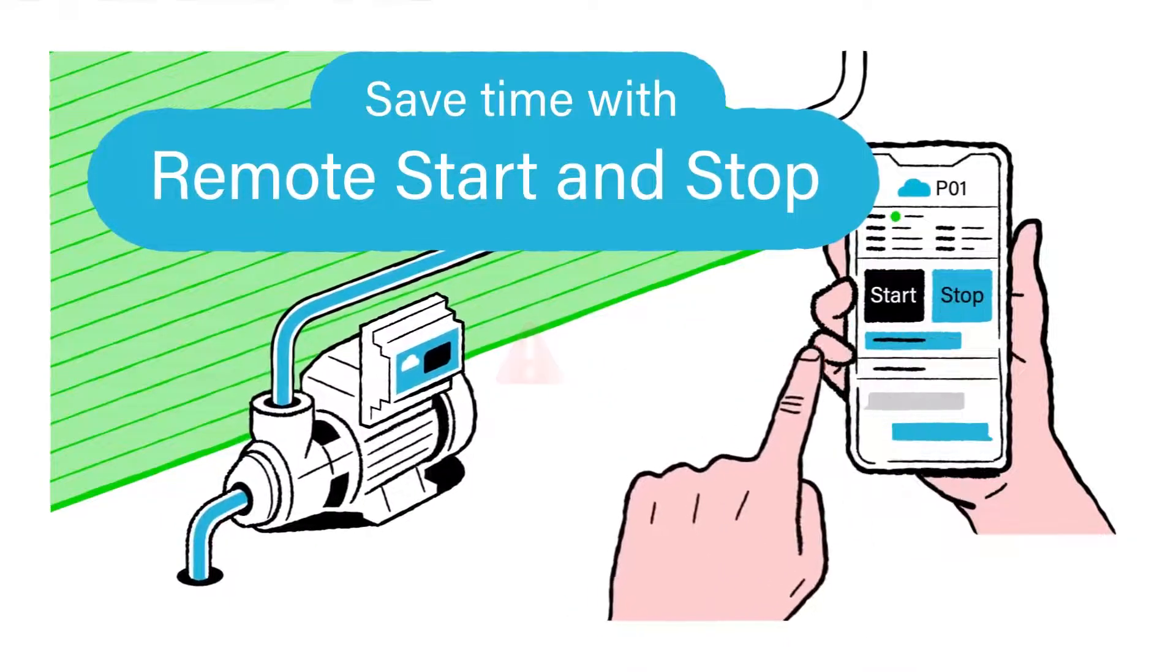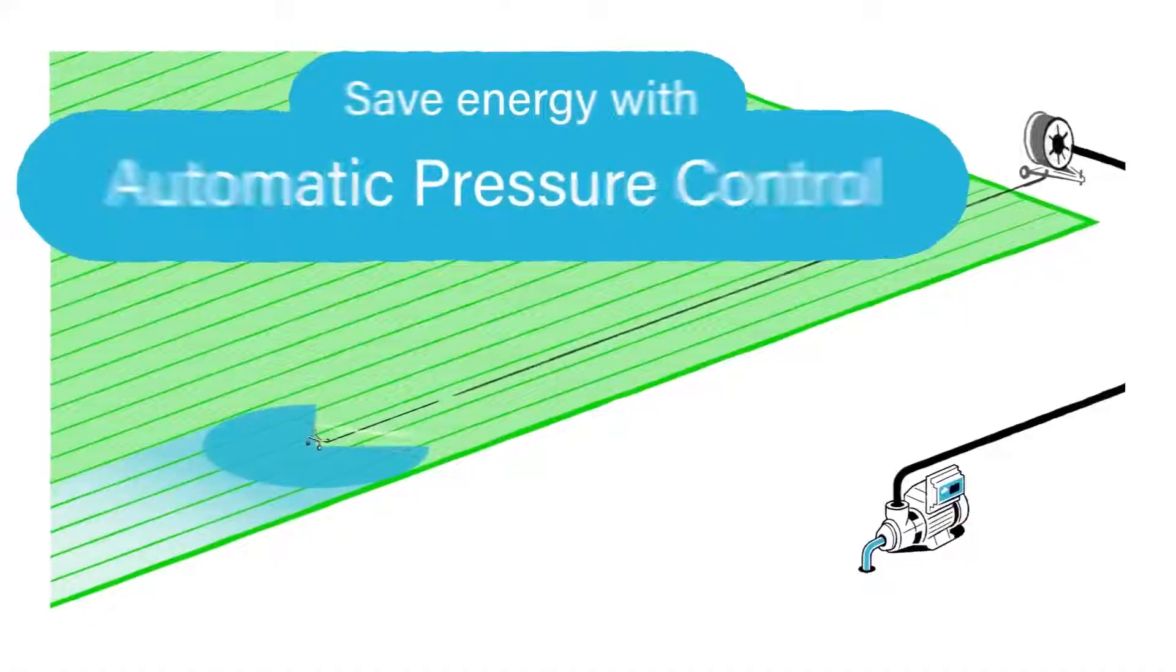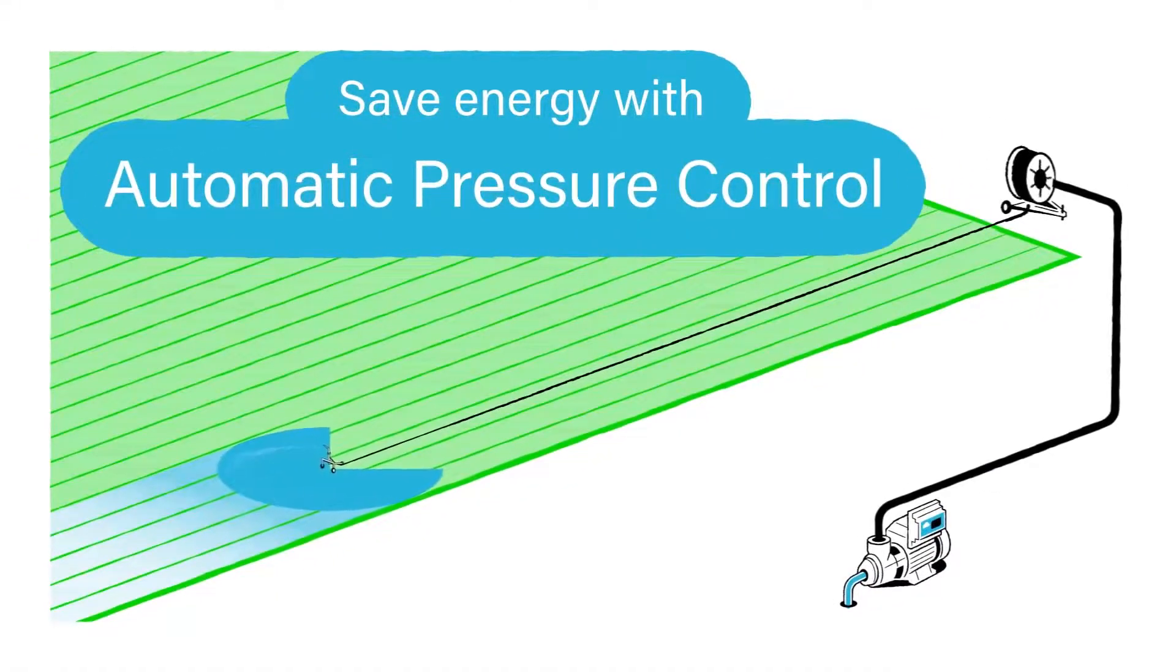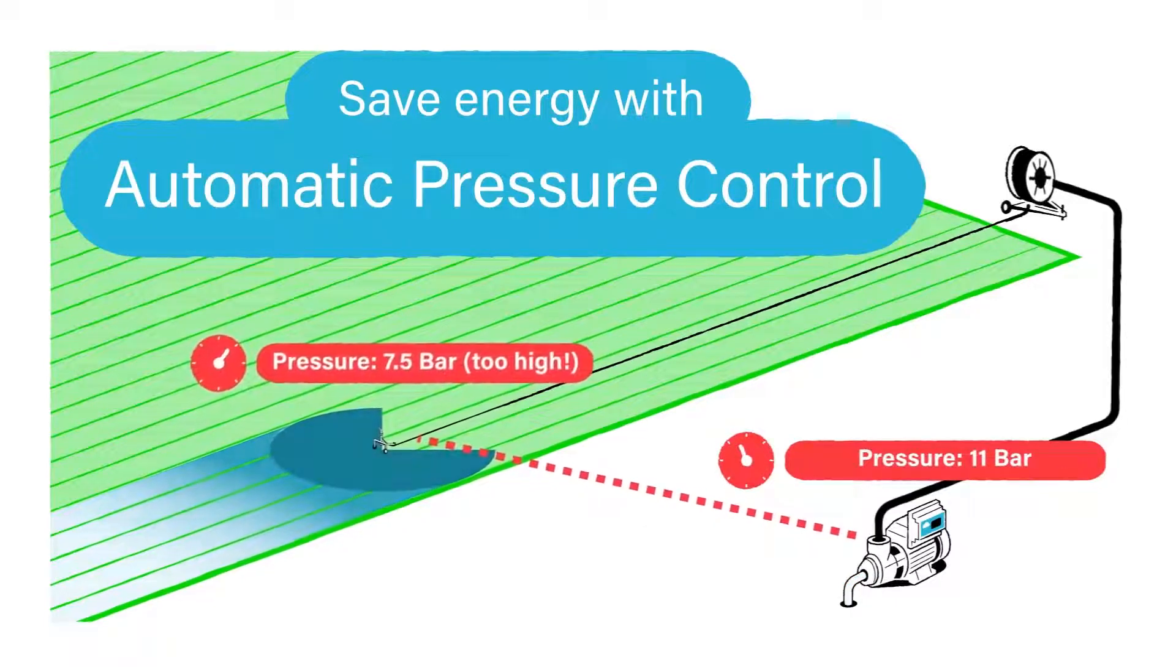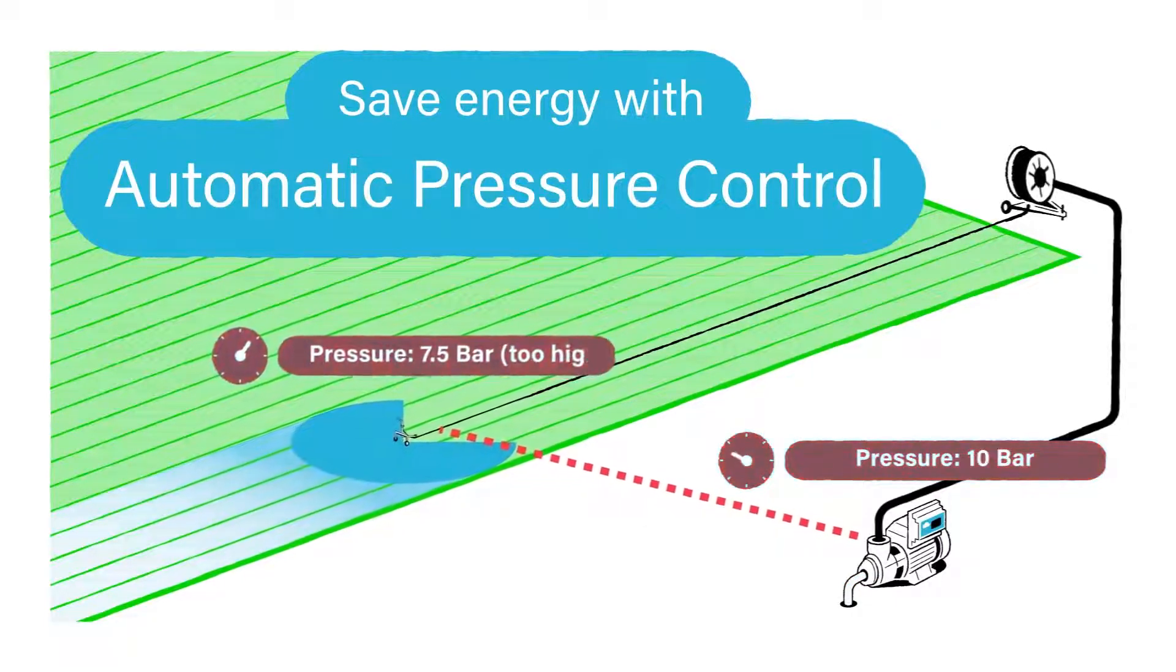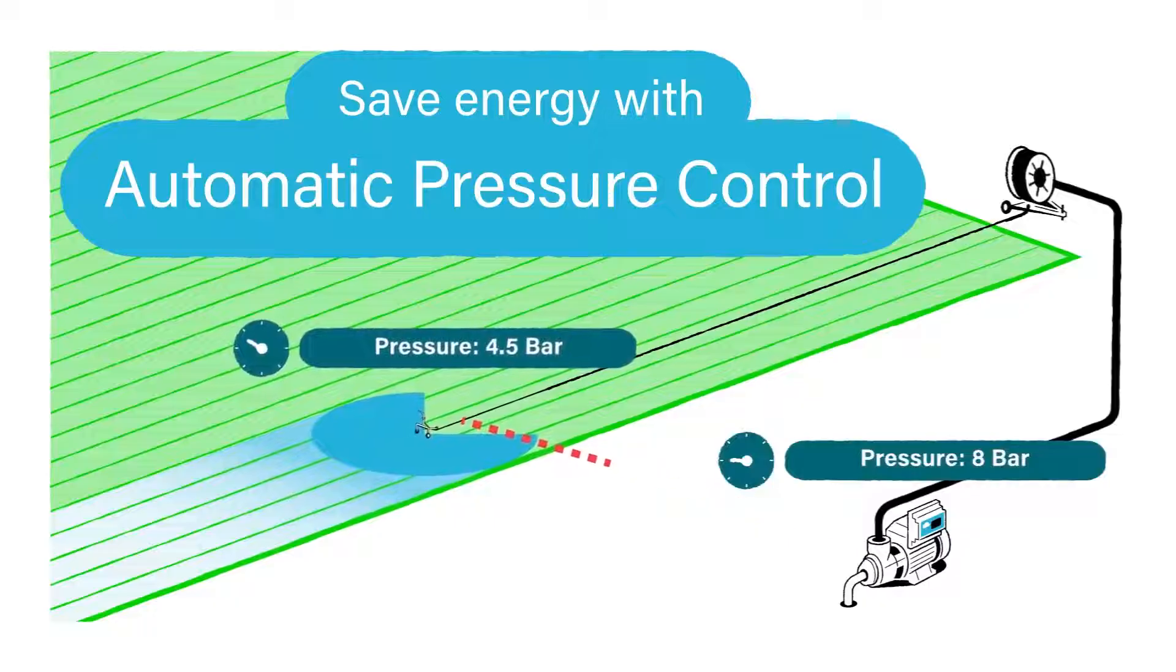The automatic pressure control enables you to set an optimal pressure for the gun cart, so the system can automatically adjust the pump's pressure to achieve the demanded value at the irrigation cart. That way you can save energy in many situations.